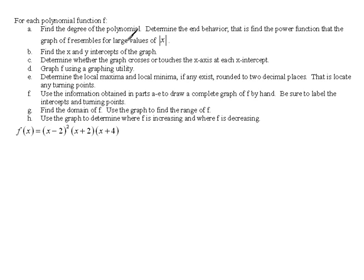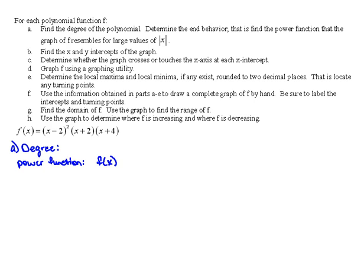We have a function here, and it says: first of all, find the degree of the polynomial, and determine the end behavior — that is, find the power function that it resembles for large values of absolute value of x. So for part A, we need our degree and our power function. As far as the degree of the polynomial, we would have to multiply this all out to see the highest power of x. This would be x squared times x times x, which gives us x to the fourth. That's our power function — that leading term. And then the degree would be a fourth degree equation because of that highest power.